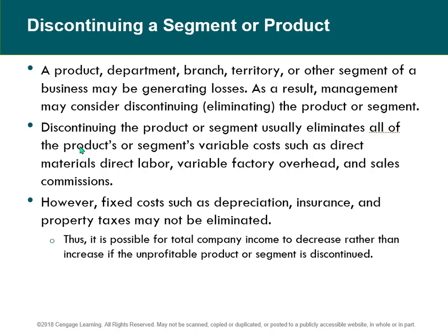The income statement will show just what each segment is doing. Discontinuing the product or segment usually eliminates all the segment's variable costs, like direct material, direct labor, variable factory overhead, and even sales commissions that salespeople might earn — by definition, those things would go away. But the fixed costs, like depreciation, insurance, and property taxes, may not be eliminated; they might still be there.